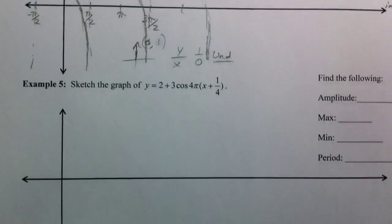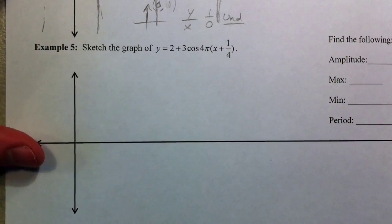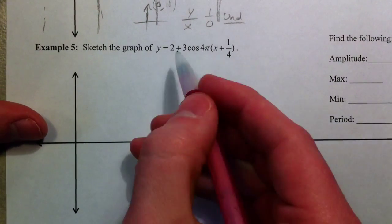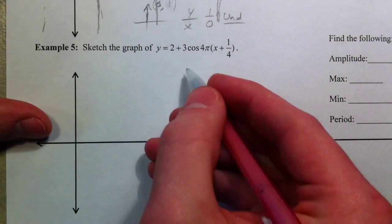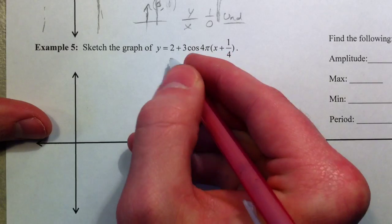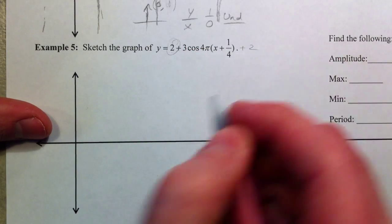And our last example, one with every little bit going on. So, 2 plus 3 cosine 4 pi, man. So, 2, this is a 2 that can be added here, or it can be seen as a plus 2 on the end. That 2 makes it go up 2.